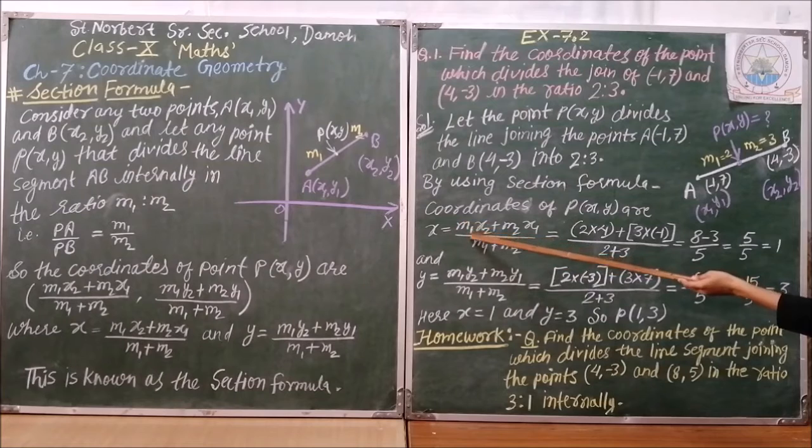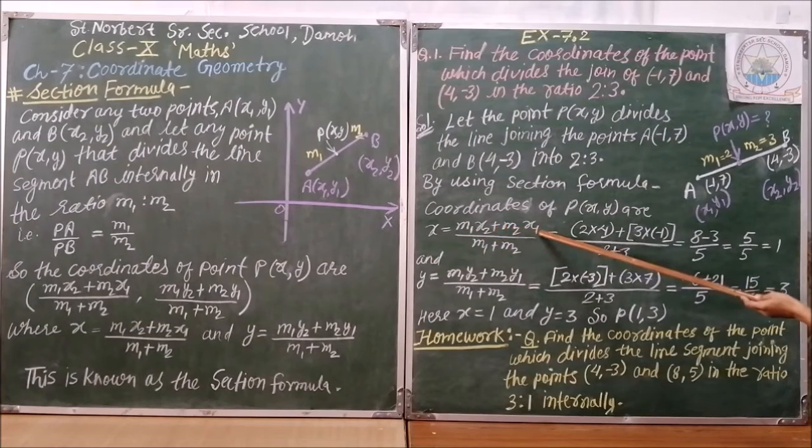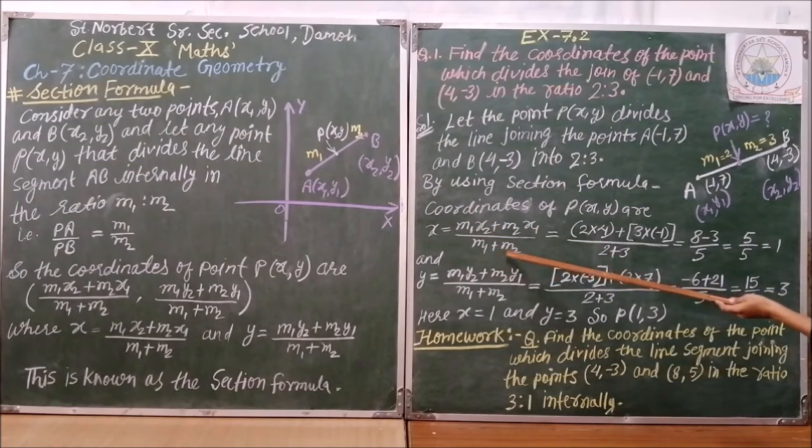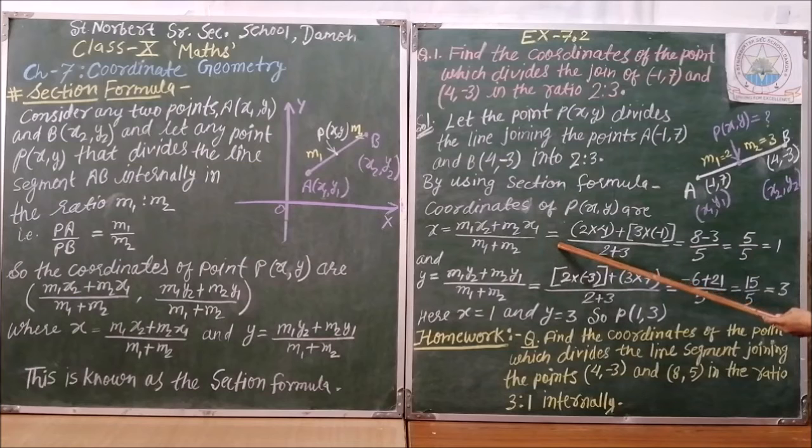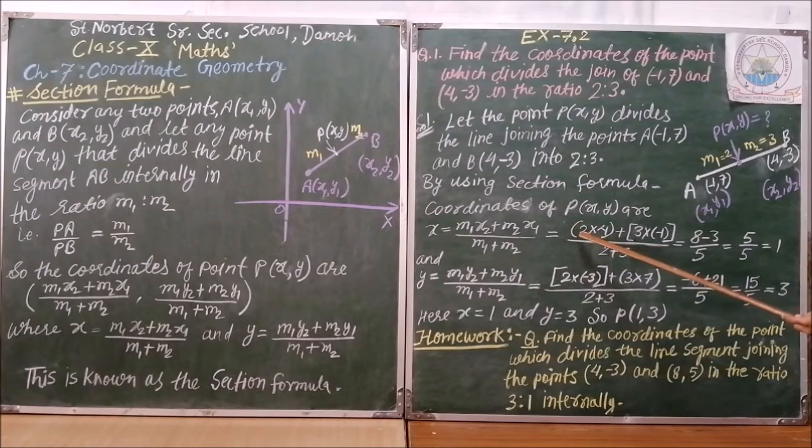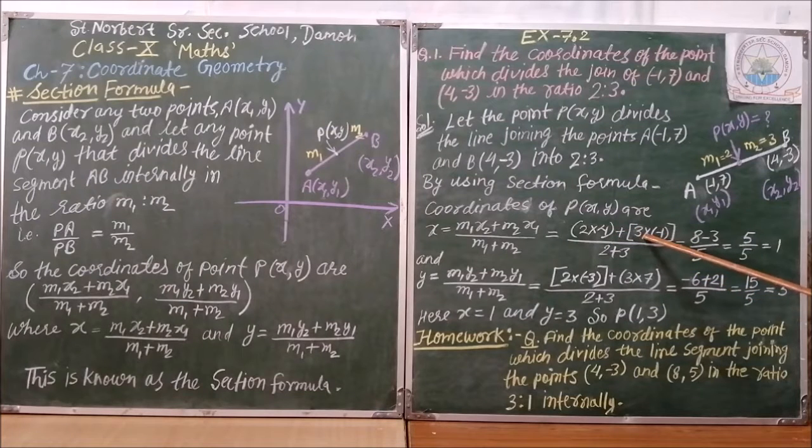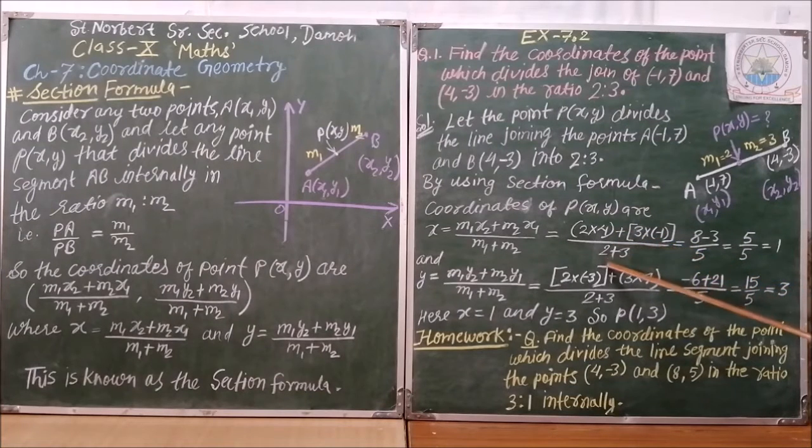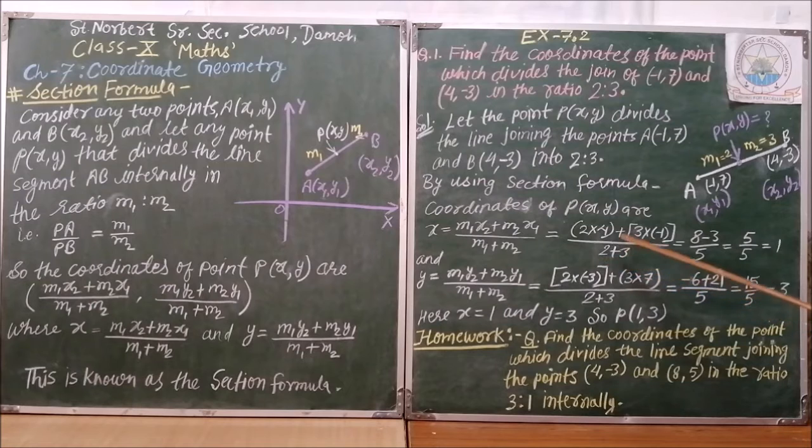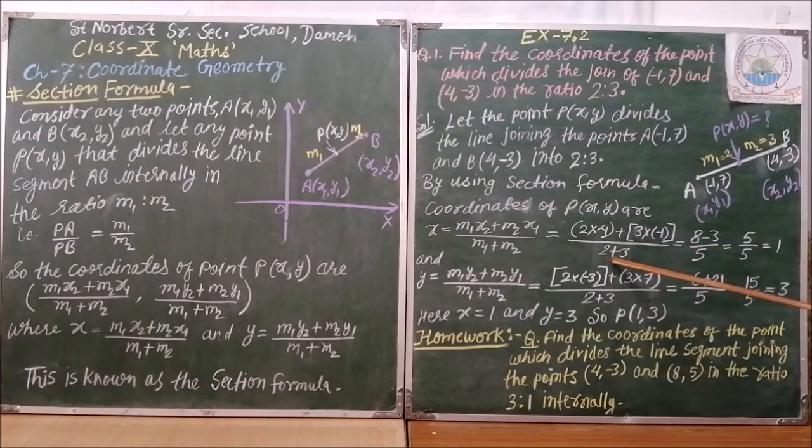So, x will be M1x2 plus M2x1 upon M1 plus M2 equals to. Now, we will keep the value M1 is 2, x2 is 4, M2 is 3, x1 is minus 1 and M1, M2 are 2 and 3. We will solve it 2 into 4, 8, 3 into minus 1, minus 3 and 2 plus 3 is 5, 8 minus 3 is 5, 5 upon 5 is 1.